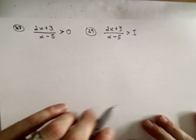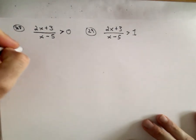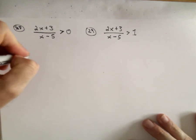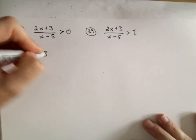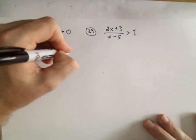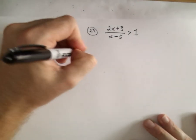So we have that on the right. And then what we do is we want a single fraction on the left, which we have. And all we do is we take the numerator, set it equal to 0, and we also take the denominator and set it equal to 0.